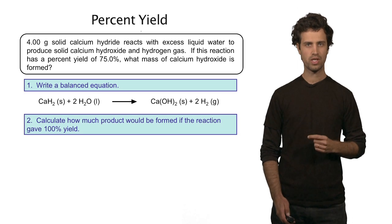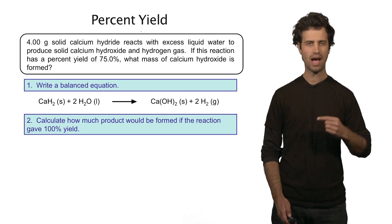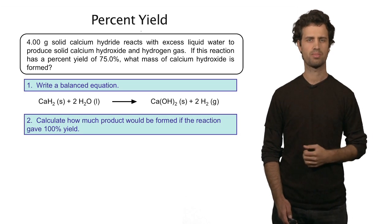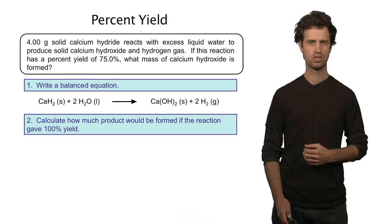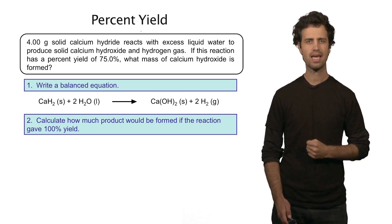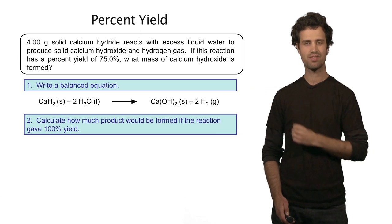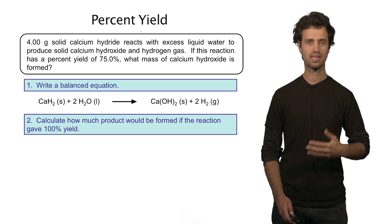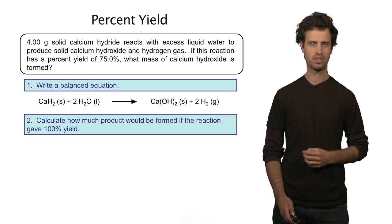From the balanced equation and knowing the limiting reagent, I can determine how much of the product I would get, assuming that I have 100%. So I have to quickly determine the limiting reagent. Well, in this particular case, that's not too difficult because it's implicitly given in the question. There's an excess amount of water, which means that calcium hydride is the limiting reagent.